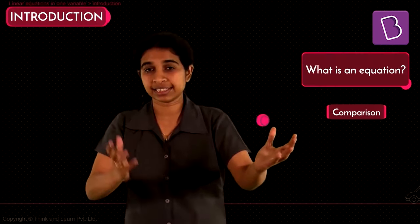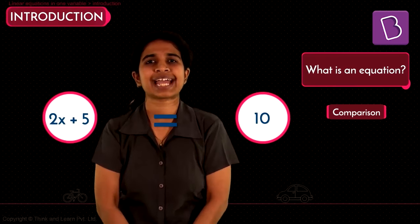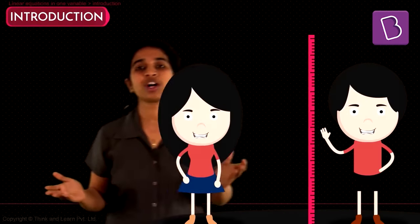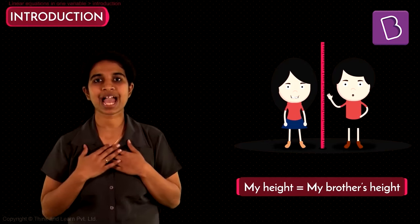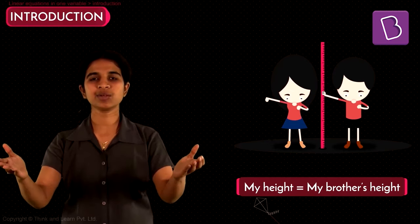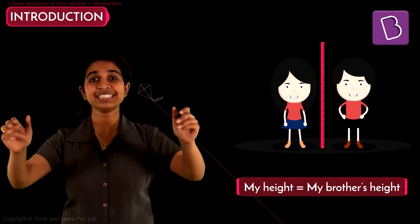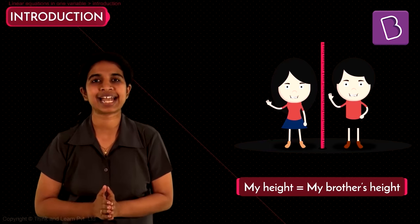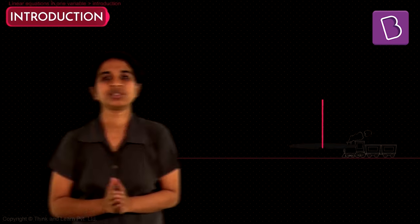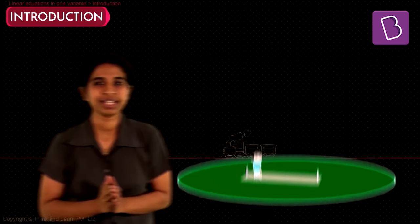This is equal to this — both of these are exactly the same. For example: 'I am as tall as my brother.' How could you write that as a mathematical equation? My height equals my brother's height. That is nothing but saying I'm as tall as my brother. An equation has an equal-to sign in between, and what is on the two sides is exactly the same.